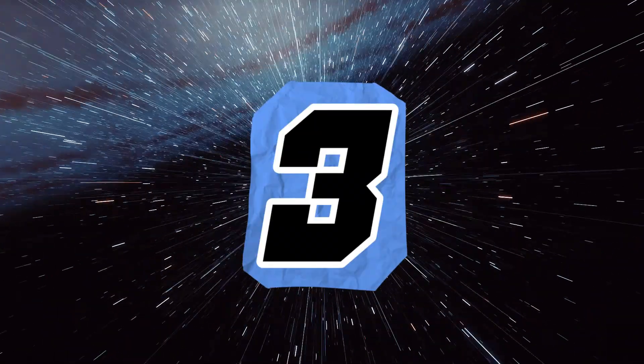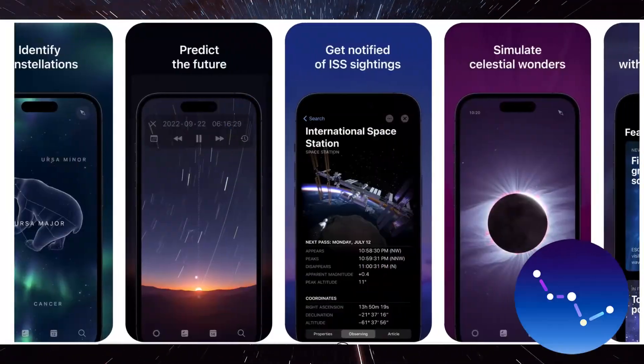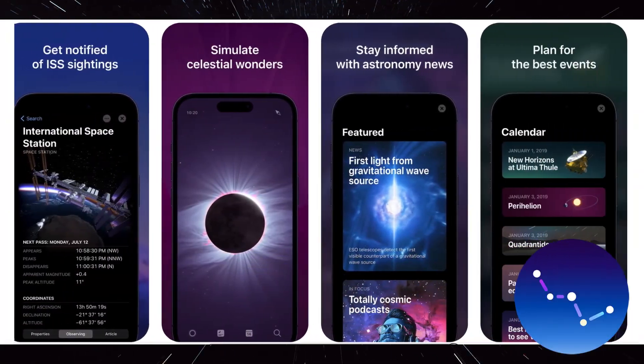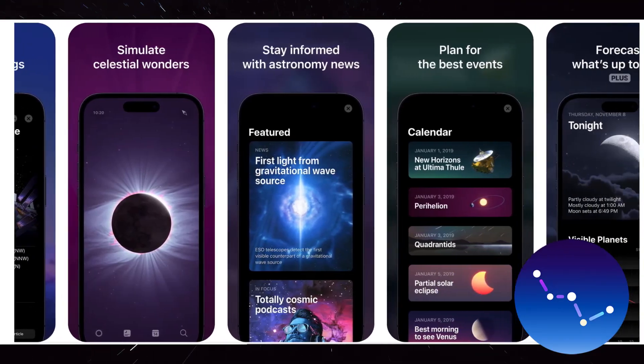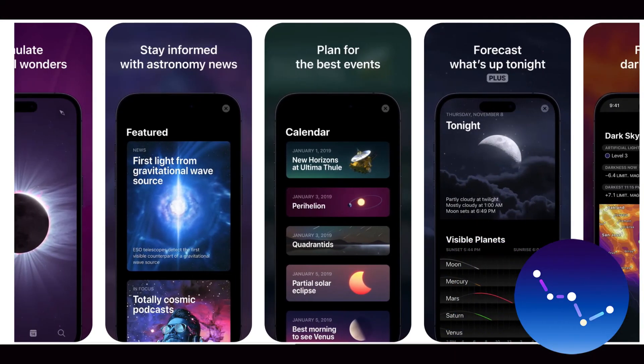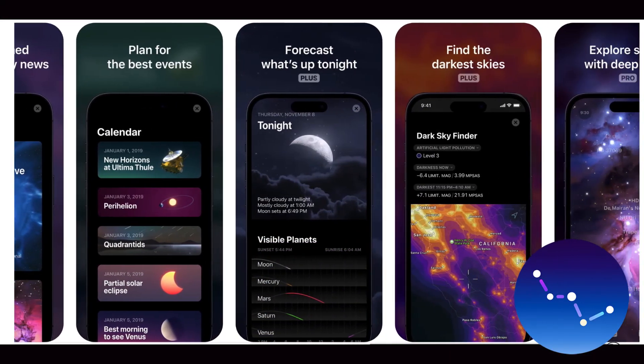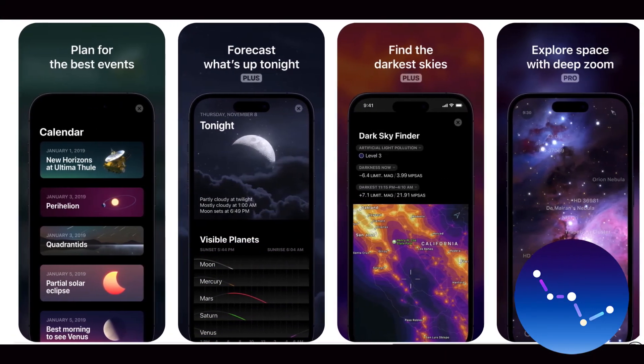Number 3: SkyGuide, a popular free app that provides an interactive map of the night sky, allowing you to identify celestial objects by simply pointing your device at the sky.